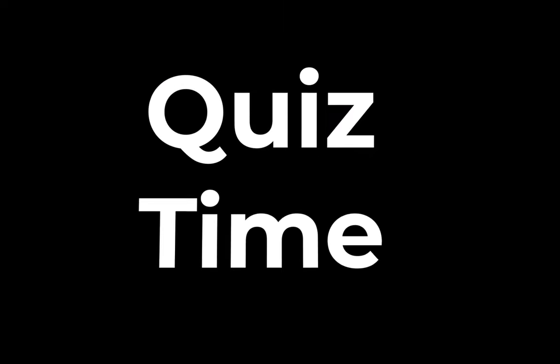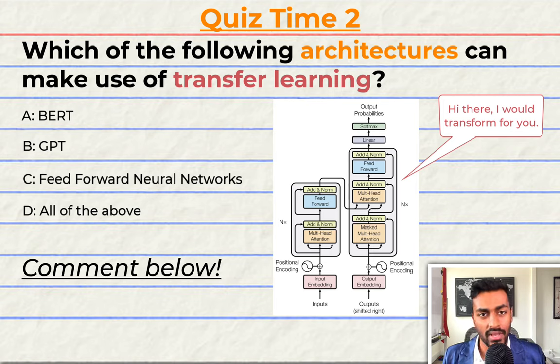Quiz time! It's that time of video again. Have you been paying attention? Let's quiz you to find out. Which of the following architectures can make use of transfer learning? A. BERT? B. GPT? C. Feed forward neural networks? Or D. All of the above? Comment your answer down below and let's have a discussion. That's going to do it for quiz time for now. But keep paying attention because I will be back to quiz you.